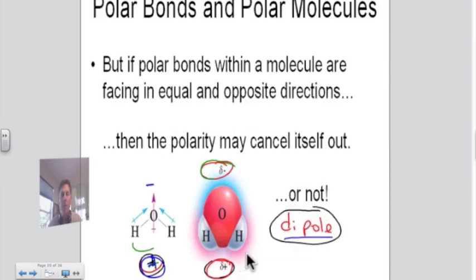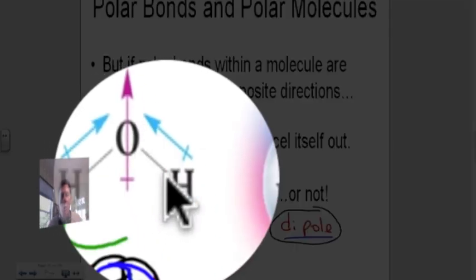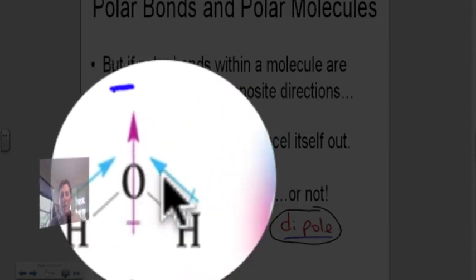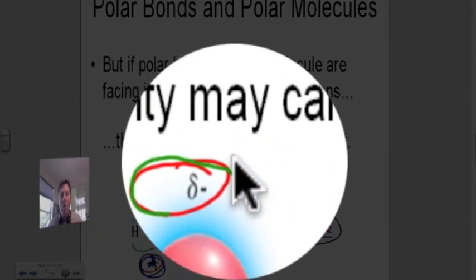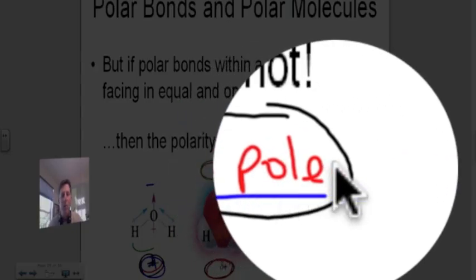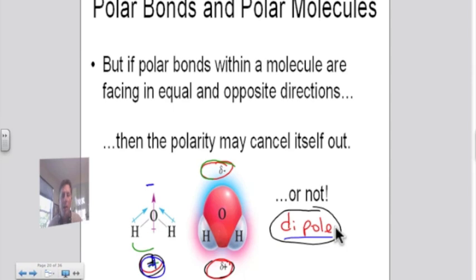If we look at water, however, water has hydrogen and oxygen. The oxygen wants the electrons more than hydrogen does. Since we have them being pulled in the same direction, we get a partial negative charge at the top of this water molecule and a partial positive charge at the bottom. This is what's known as a polar molecule — two different ends. It's also called a dipole, so dipole and polar are really the same thing.